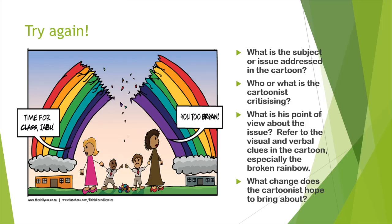Now I'd like you to try again on your own. Study the cartoon carefully and then let's have a look at these questions. Firstly, what is the subject or issue addressed in this cartoon? Who or what is the cartoonist criticizing? What is his point of view about this issue? Refer to the visual and verbal clues in the cartoon, especially the broken rainbow. And lastly, what change does the cartoonist hope to bring about? Remember to write down the answers to each question in detail before continuing with this video, then I will discuss the cartoon with you.